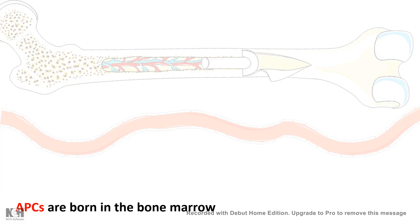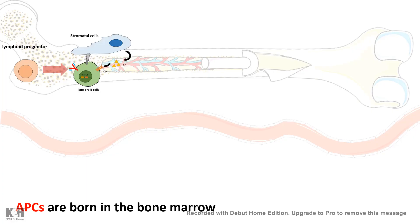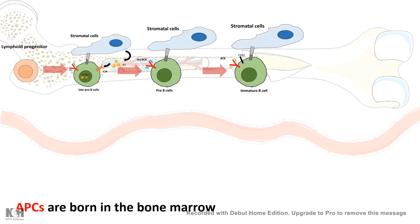Inside the bone marrow all these APCs are born. Inside the bone marrow there are lymphoid progenitor cells. From the lymphoid progenitor, in subsequent steps, the B cells are produced. B cells leave the bone marrow while still immature, then migrate to the peripheral lymph nodes where they become mature and start engulfing pathogens and displaying their antigens on their MHC molecules.